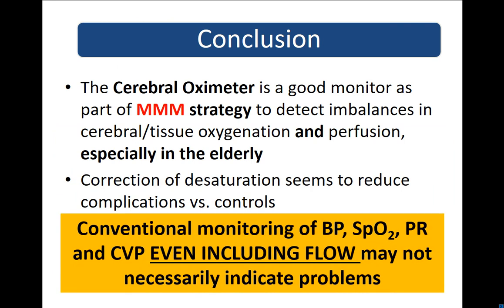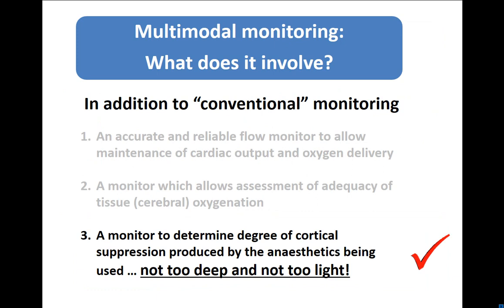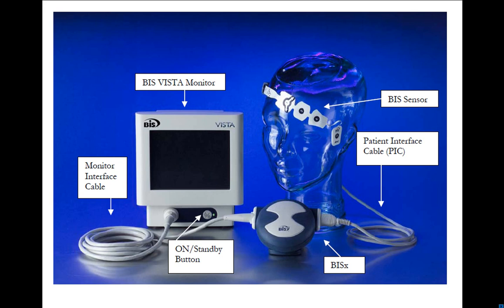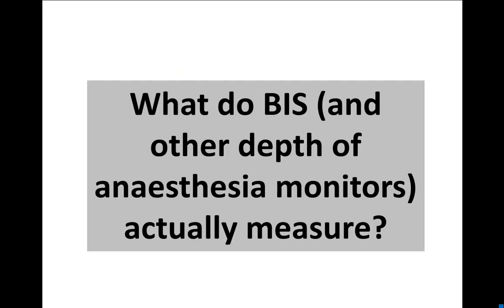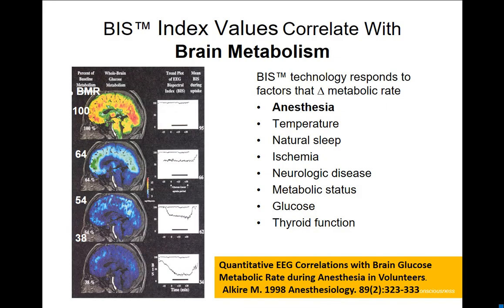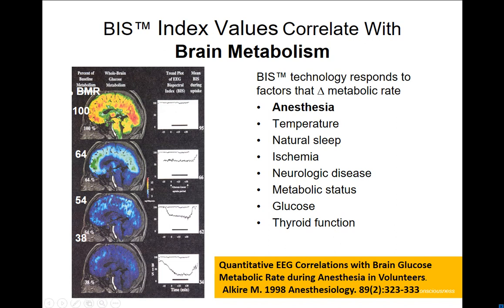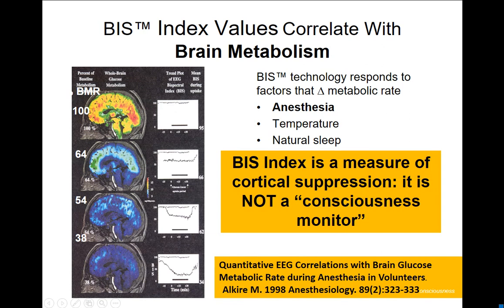In conclusion on cerebral oximetry: it's a good monitor, it works, and the important point is that conventional monitoring may not show any problems, even when you include flow. The third monitor is the cortical suppression monitor. By far the most cases have been done with BIS. BIS and other depth of anaesthesia monitors actually correlate more with basic metabolic rate — there's a good correlation between BIS and change in metabolic rate, with whole brain glucose metabolism. BIS is an index of cortical suppression; it is not a consciousness monitor, although it does seem to correlate quite well.